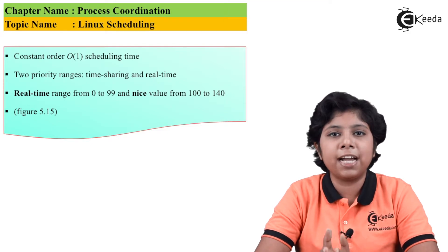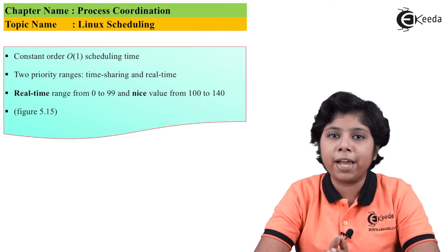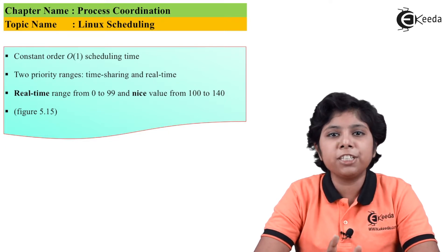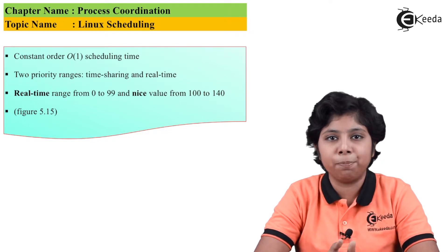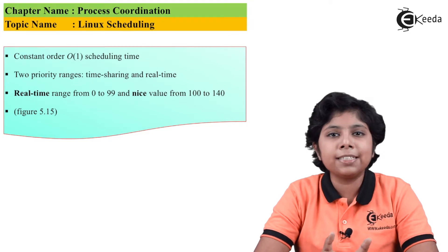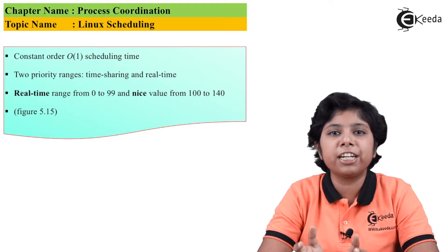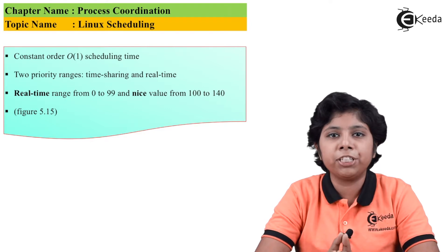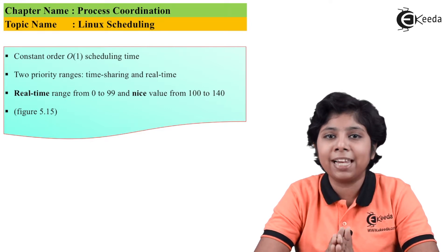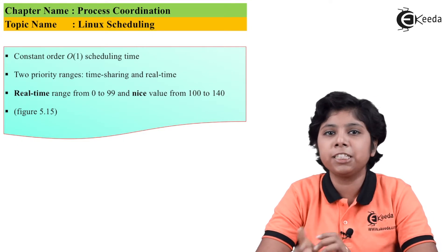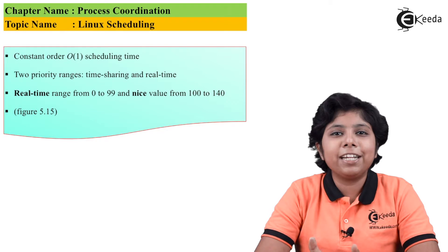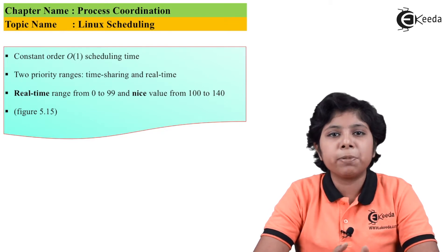Linux scheduling is done with scheduling classes, and each class has a specific type of priority. Processes must belong to a scheduling class to be activated or allocated CPU time. The Linux kernel provides different scheduling classes, allowing different scheduling algorithms for different processes based on system needs. For example, the scheduling algorithm needed for a Linux server will be different from that of a mobile system running Linux.